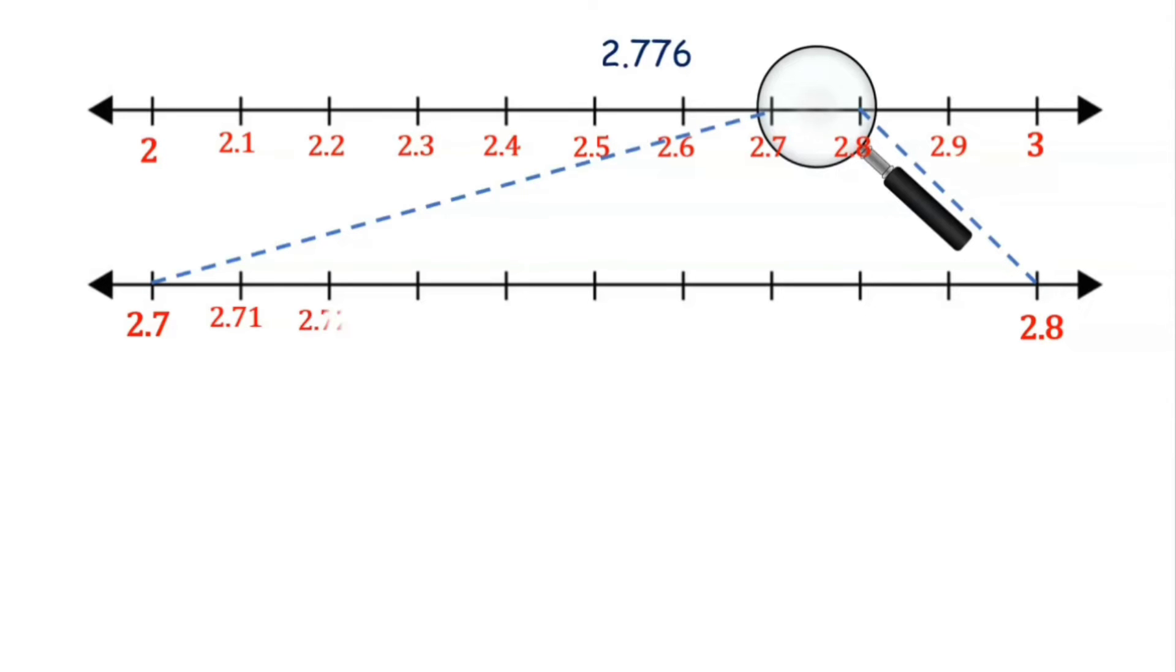Again, our number 2.776 lies between 2.77 and 2.78, as it is having 2.77 after another digit. So again, focusing on this portion between 2.77 and 2.78.